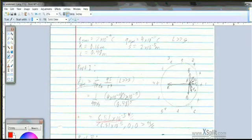we get 6.51 times 10 to the negative 5 newtons per coulomb.